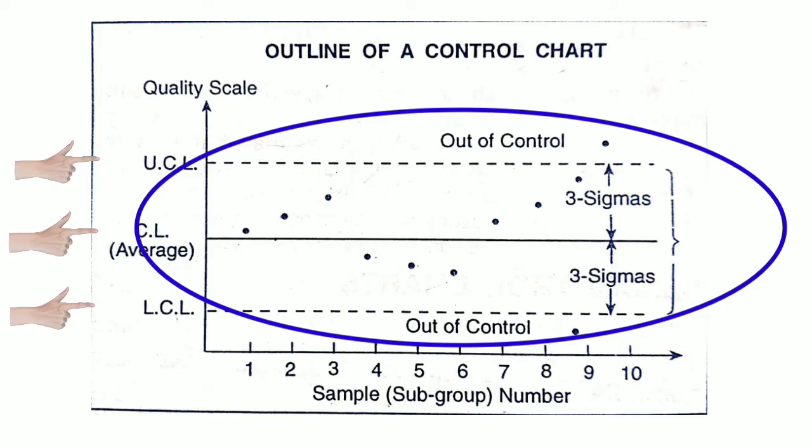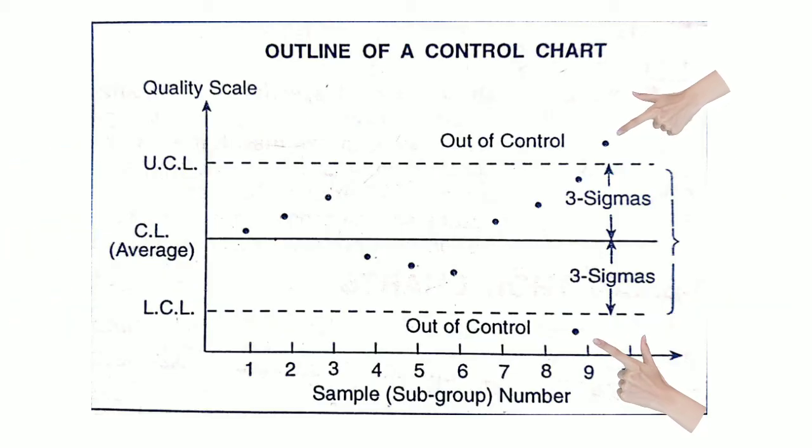Otherwise, if there are values outside these limits, it means that the process is not in control. That means there are assignable causes. So we can remove the assignable causes.